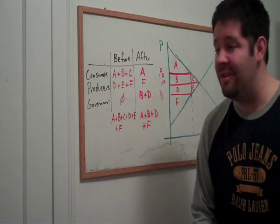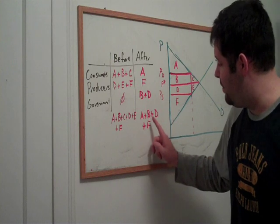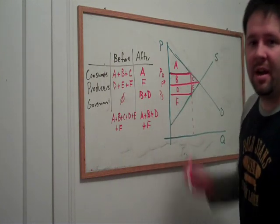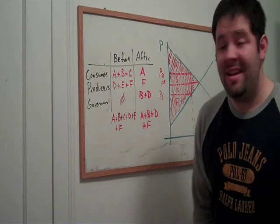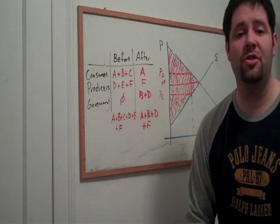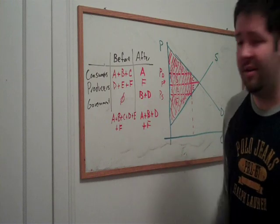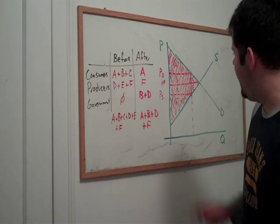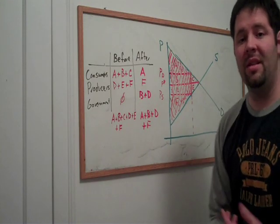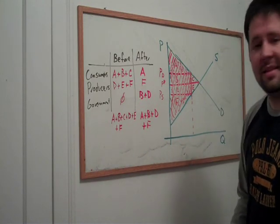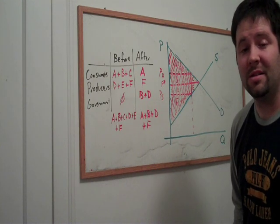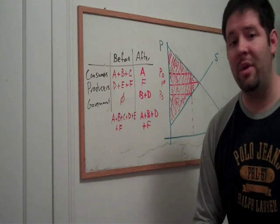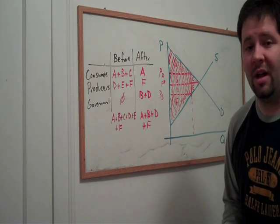Now we see that after the tax, we're left with areas A plus B plus D plus F. Now that is this area here on the graph. And what we'll see is that this area falls short of the total surplus calculation from before the tax. What we'll see is that now we have C plus E less total surplus. Now that C plus E total surplus that we lost, no one gets. Not even the government gets it. And so what we call that is we call that area deadweight loss.